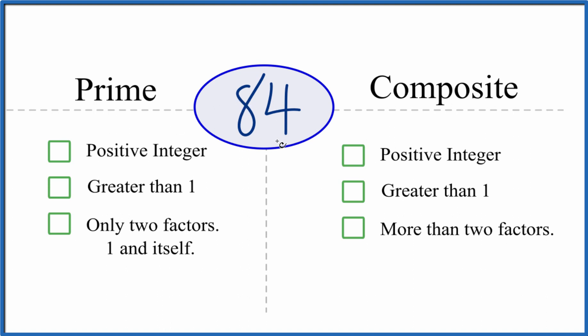So is it a positive integer? Yep, it's a whole number. It's positive. Greater than 1? Yes. And are there only two factors that go into 84? 1 and 84.